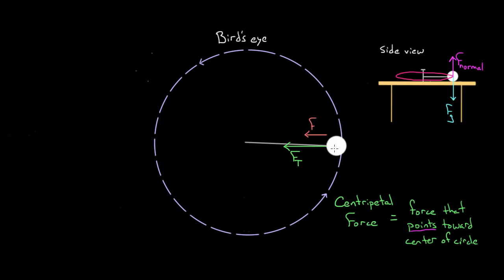It's possible you could have two forces inward — maybe there are two ropes and you have a second tension pulling inward. But you'd better be able to identify what force it is before you draw it. Don't just call it F-centripetal. You might say, yeah, I get it — the centripetal force is just an extra title we give to a force that happens to point toward the center of the circle.